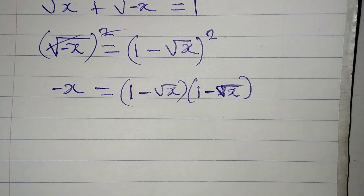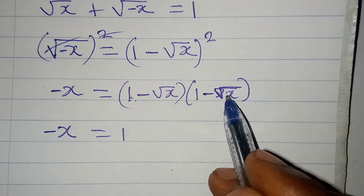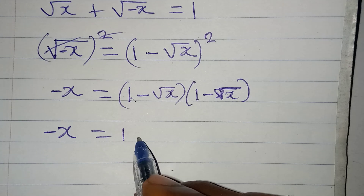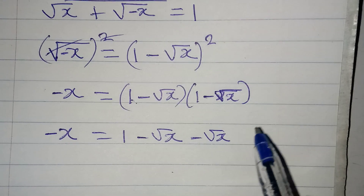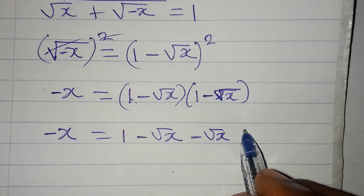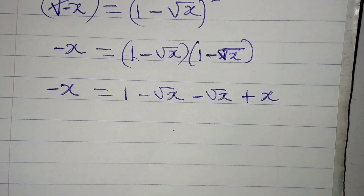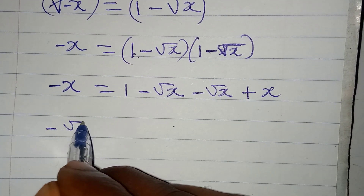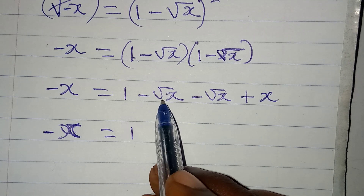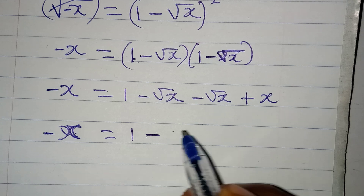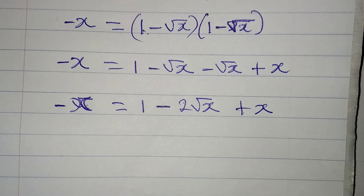Now let us open those brackets: negative x equals 1×1 = 1, then 1×(-√x) = -√x, then (-√x)×1 = -√x, and (-√x)×(-√x) = +x because the roots cancel. So we have: -x = 1 - 2√x + x.